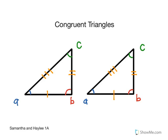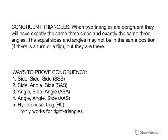Today we are going to talk about congruent triangles. When two triangles are congruent, they will have exactly the same three sides and exactly the same three angles. The equal sides and angles may not be in the same position if there is a turn or a flip, but they are there.